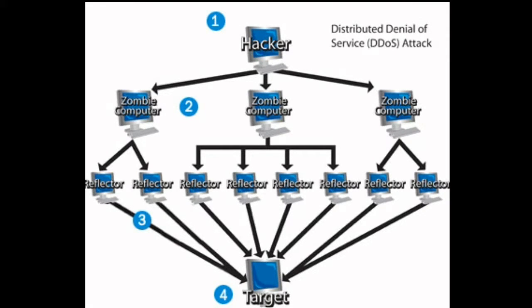Now, a DDoS attack is different. The website crashes due to traffic, but the difference is that the traffic comes from multiple sources. The traffic is unknown and fake, generated by code created by the hacker across three or more computers — injected and controlled by the hacker.